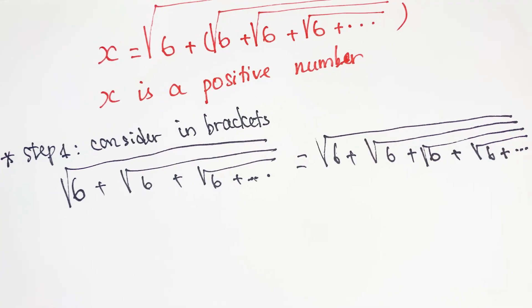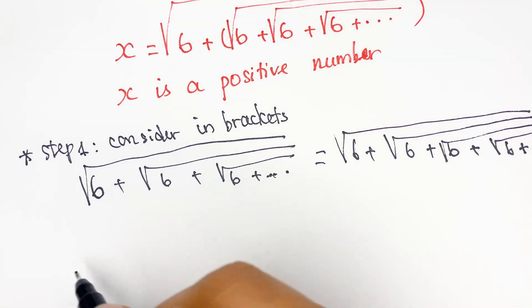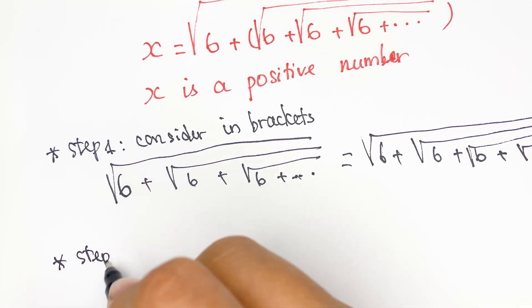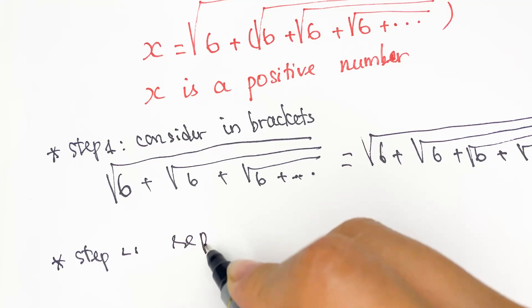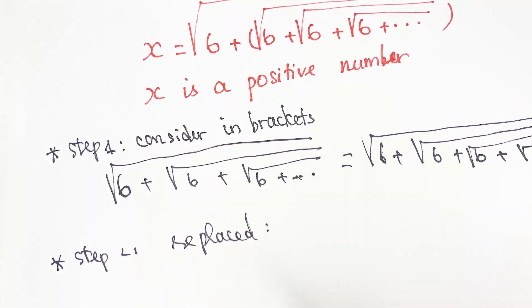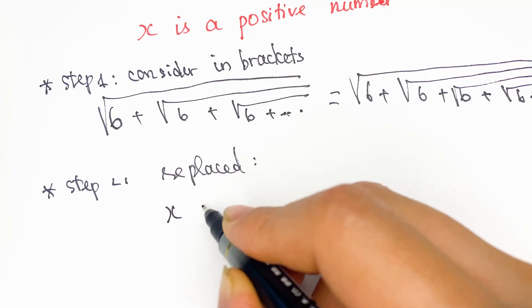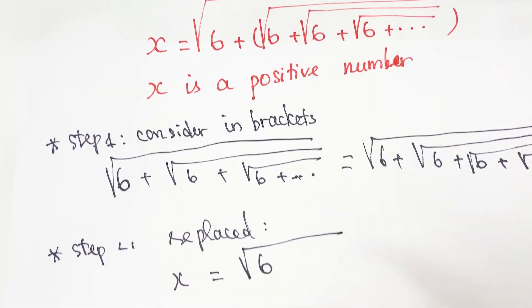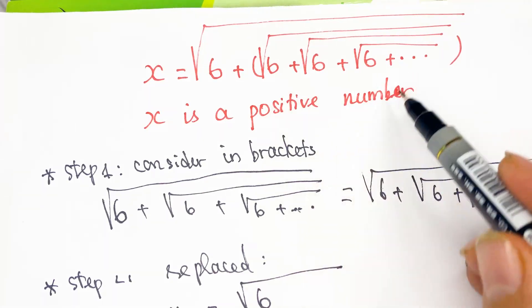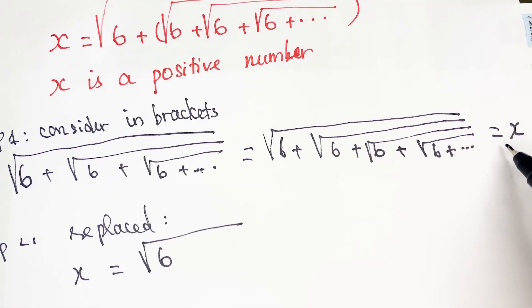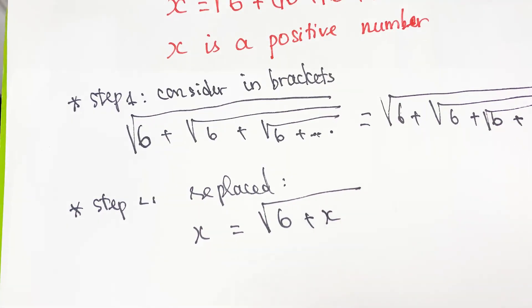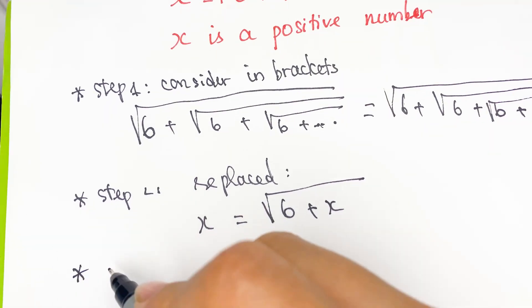So therefore, when replaced, we will have x equals square root of 6, and you can consider brackets is equal to x plus x.